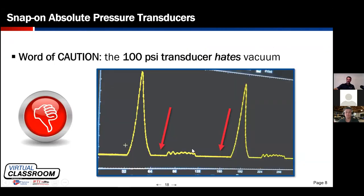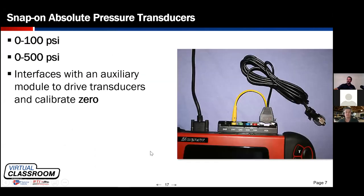The zero-to-100 transducer — at least the older ones — had an undesirable trait: those familiar with in-cylinder pressure waveform analysis know there should be data below the baseline in vacuum, but that transducer refused to output below that point. It wouldn't go into a state of vacuum. I've been told through the grapevine that newer Snap-on transducers have been redesigned and no longer exhibit this trait — I don't know if that's true.